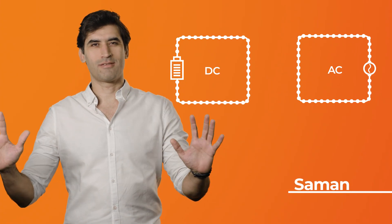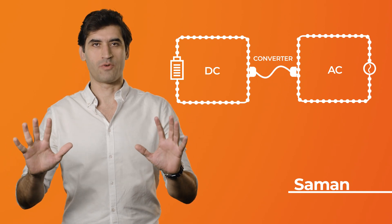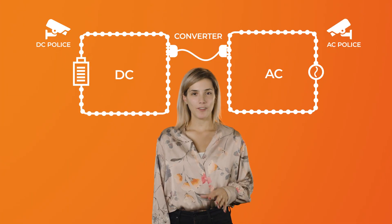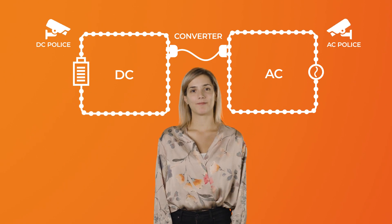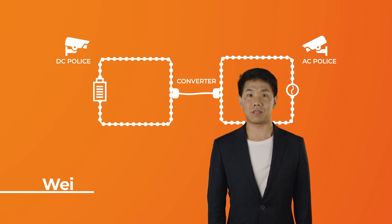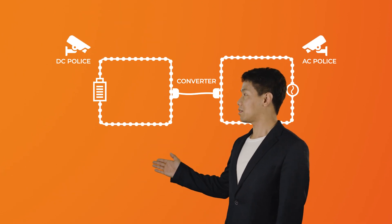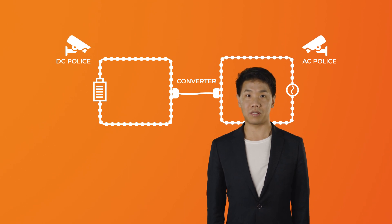In our work package, we look at different aspects of these two systems as they interact. AC and DC systems are connected together via power converters. We also have protections, which are like police watching the system. Our research package is also doing research on DC protections. When lightning happens, DC protection is a very important part to isolate DC faults.